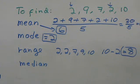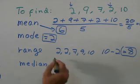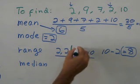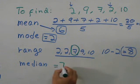And now the median. You need to order first, and when you have the order, the number in the middle, that's the median. The number in the middle. So median is equal 7.